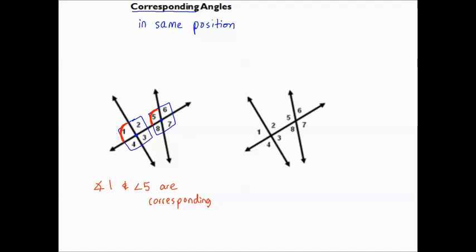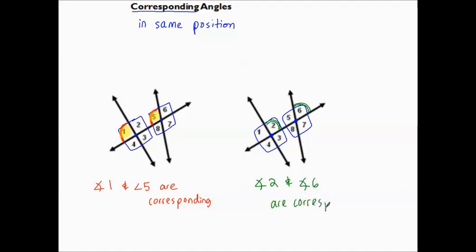I could have picked a different pair of corresponding angles. Sometimes it's good to take a highlighter to notice the angles. Angle one is on the left side, angle five is on the left side. Looking at another intersection, I could pick an angle at the top, like angle two. At the top of the other intersection would be angle six. Therefore, angle two and angle six are corresponding angles — angles in the same positions.